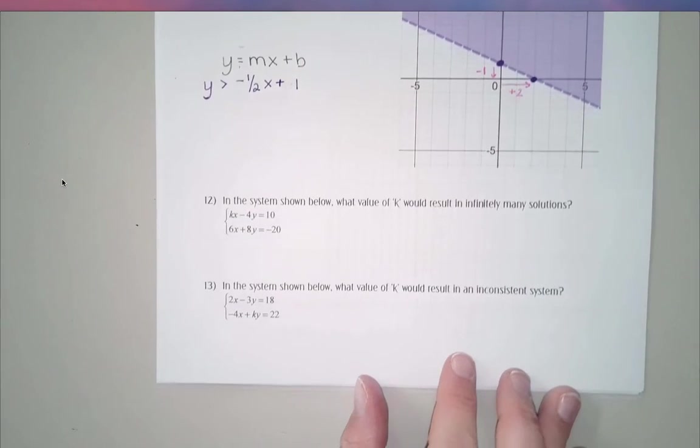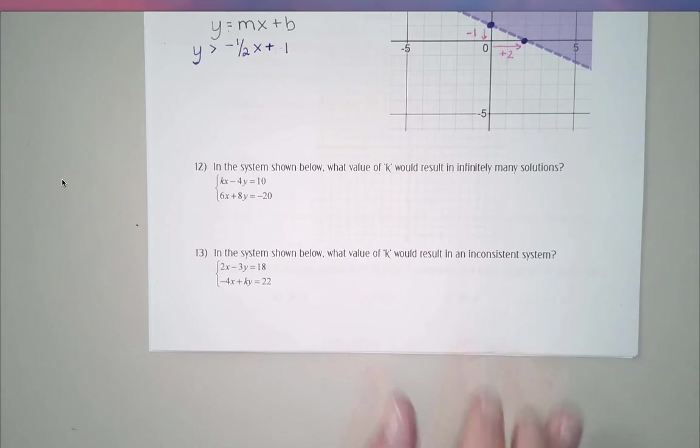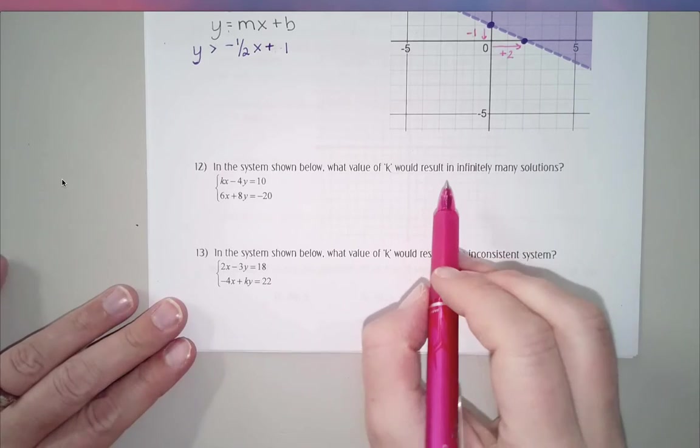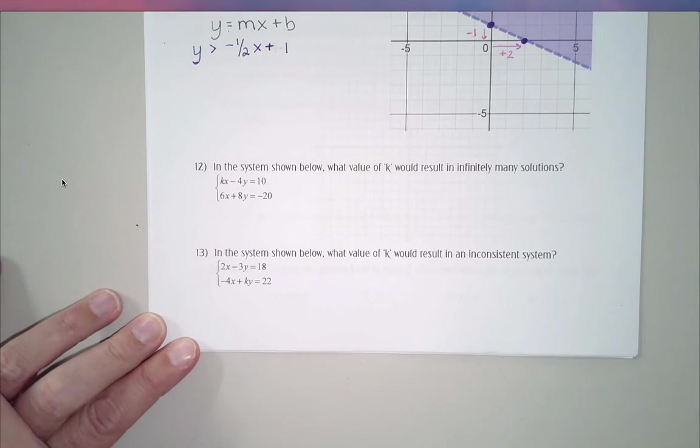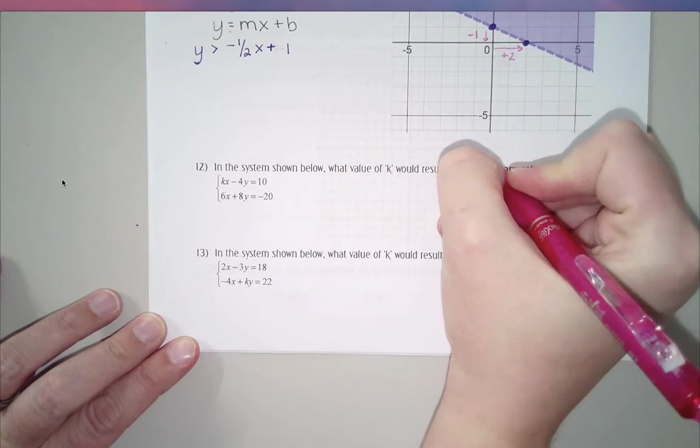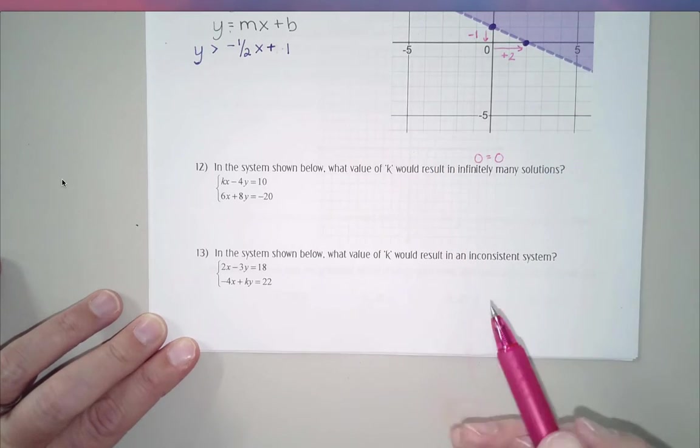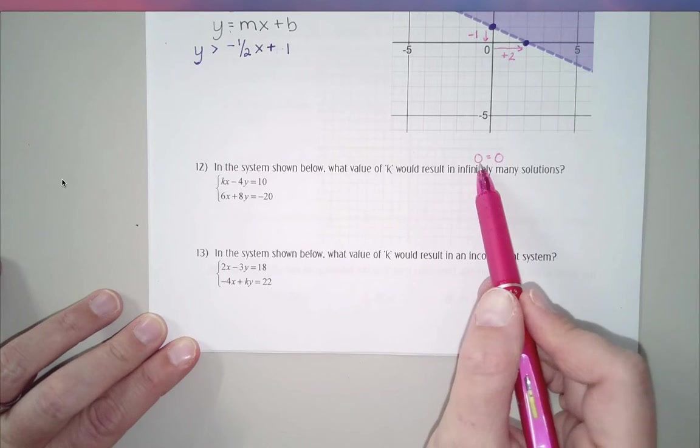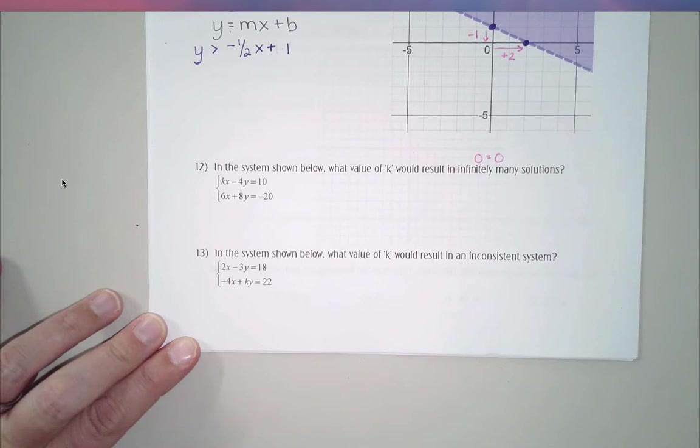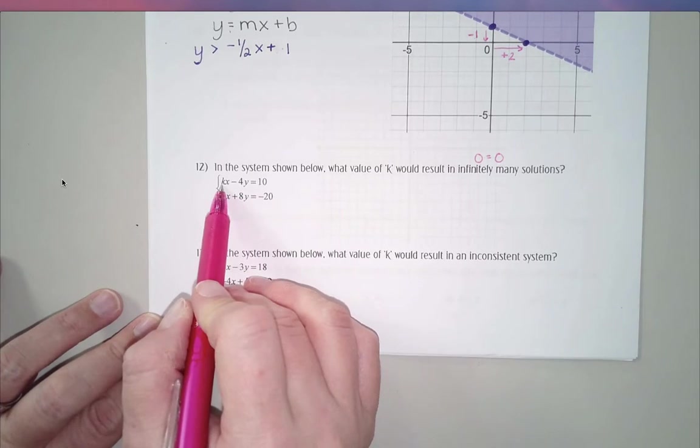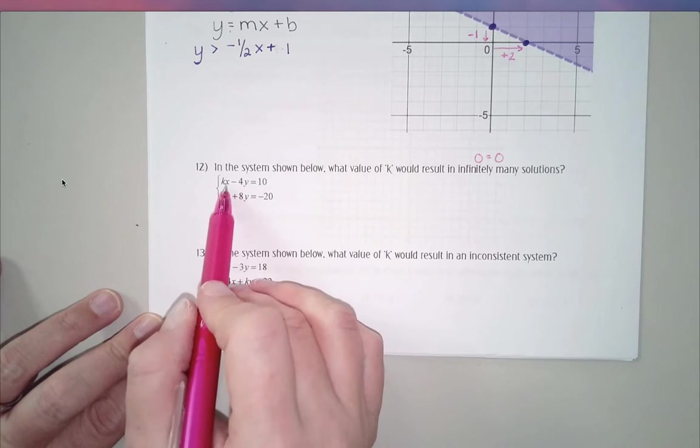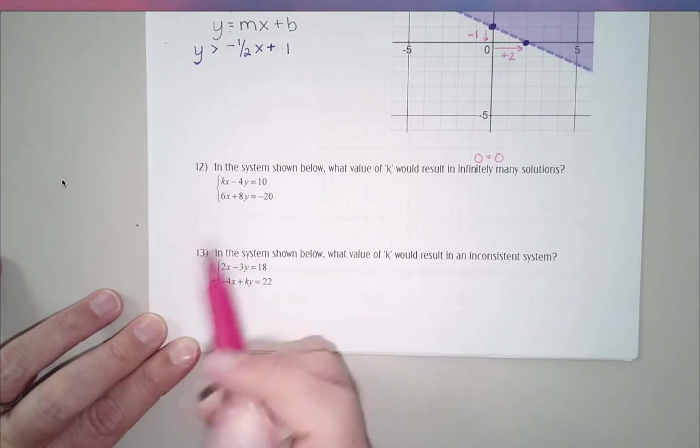Let's take a look at number 12. These are really good questions, really good conceptual questions. What value of k would result in infinitely many solutions? So in order to get infinitely many, especially when we're looking at an elimination problem, and the way this is lined up, I'm thinking elimination, we want our result to end up like this: we want 0 equals 0. Meaning I want x and y and my numbers on the other side to all cancel out.